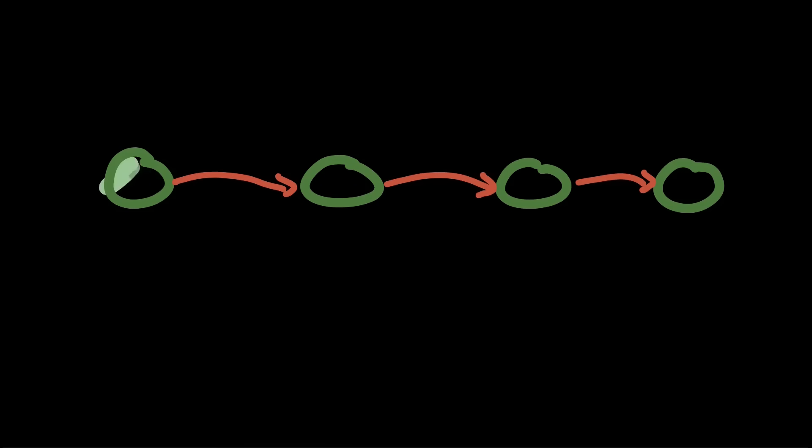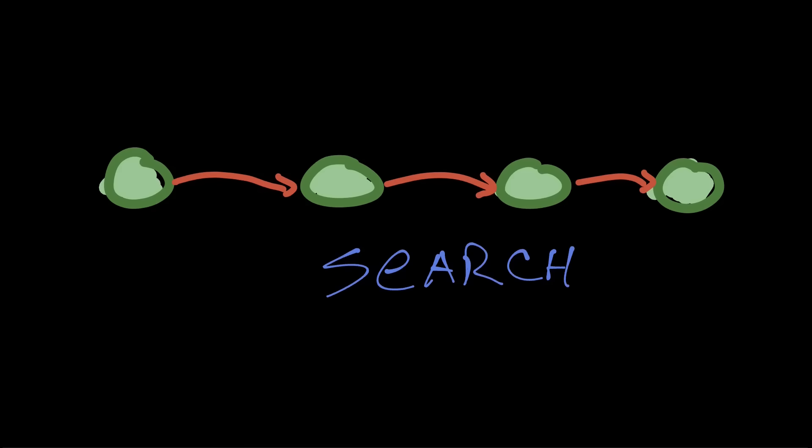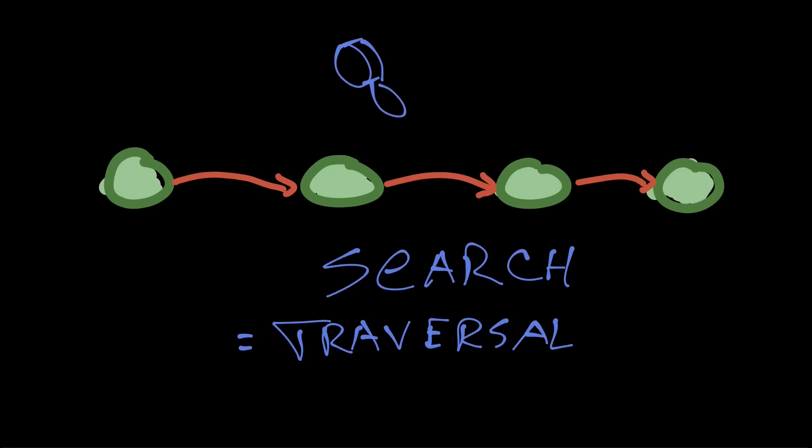It stands to reason, then, that searching in a linked list is basically traversing the list, checking each item in sequence, until you find what you want. But here's where things get a little interesting.